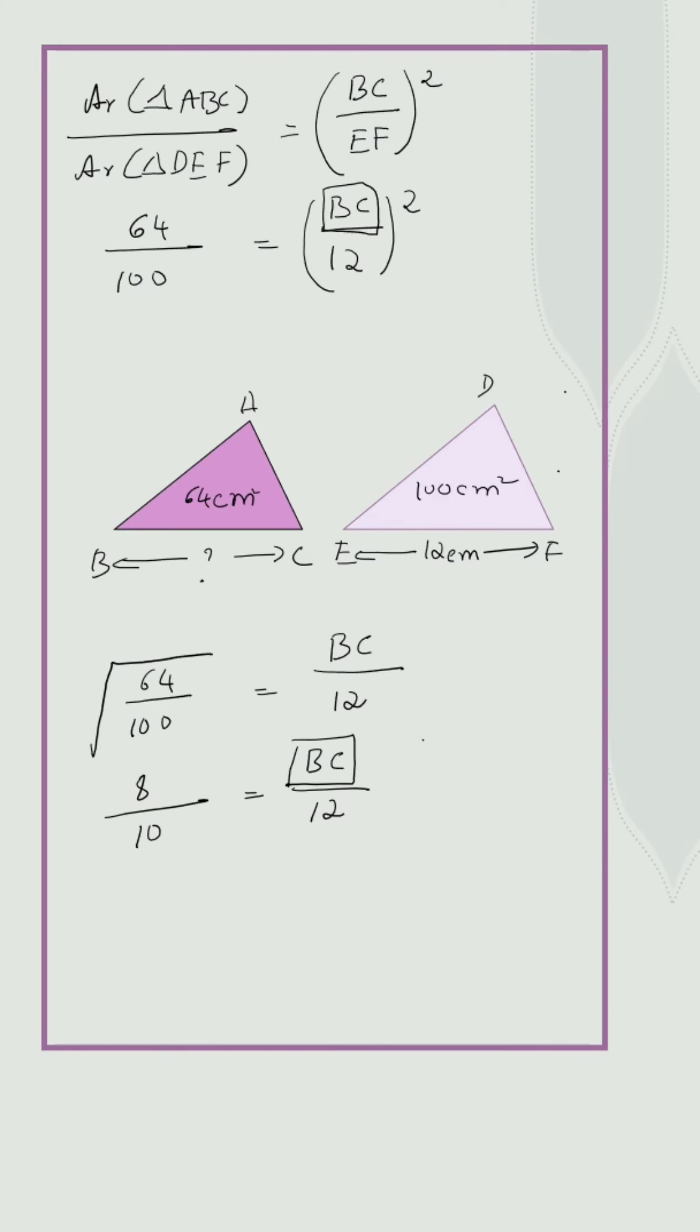Now we have to find the value of BC. So BC is equal to 8 into 12 upon 10. 2, 6 are, 2, 5's are, 8 into 6, 48 upon 5. That is equal to 9.6 cm.